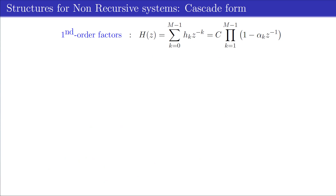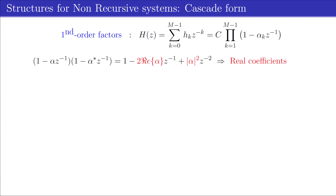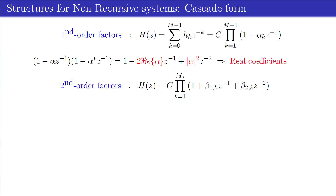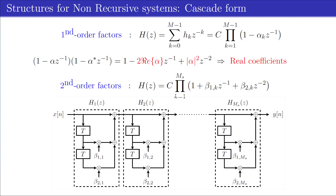The system function H of the non-recursive structure may be factored into a product of first-order factors, where alpha k for k equals 1 until m-1 are the zeros of the system function H. If the complex roots occur in complex conjugate pairs, these conjugate pairs may be combined to form second-order factors with real coefficients, and the filter can be implemented as a cascade of second-order non-recursive structures, as illustrated in the figure.